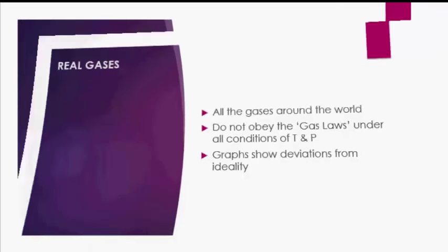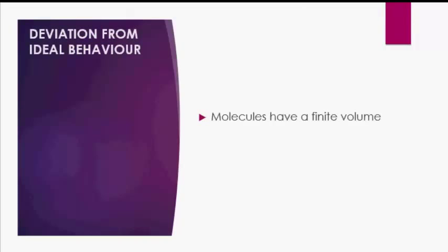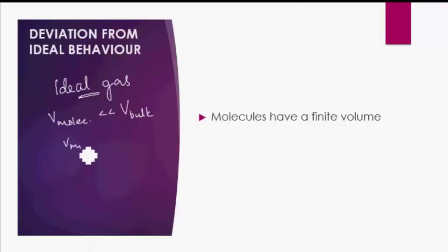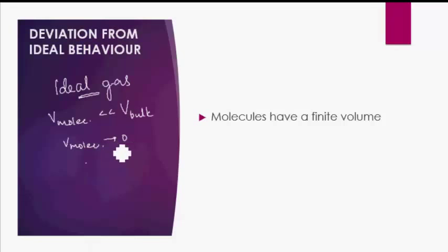There are two basic reasons why there is a deviation from ideal behavior. The first reason is that molecules have a finite volume. One important assumption in kinetic theory while studying ideal gases was that the individual volume of molecules is much much less than the volume of the bulk gas, so we assumed that the volume of molecules tends to zero — treating them as point particles.